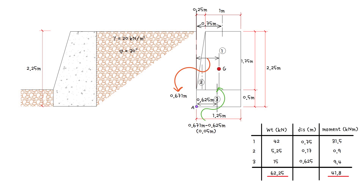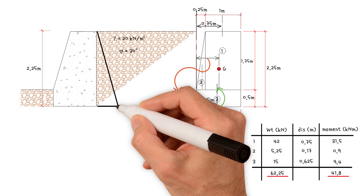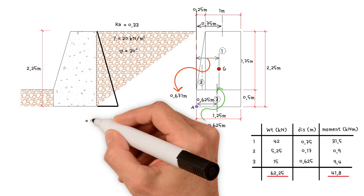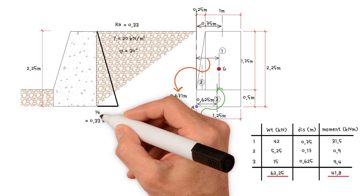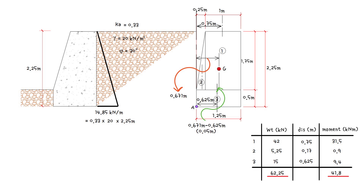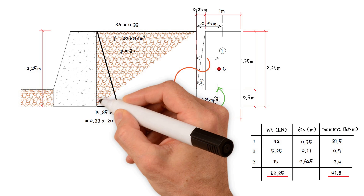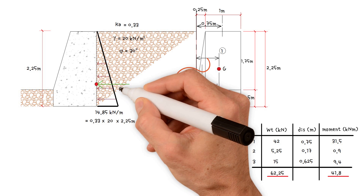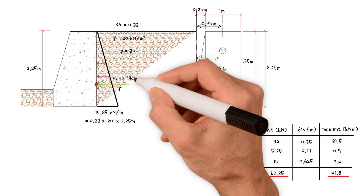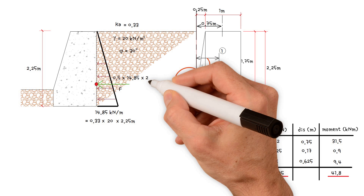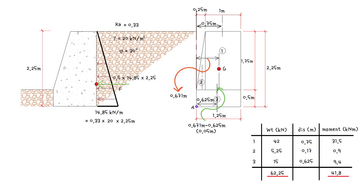Next, working out the horizontal soil pressure at the base of the wall, which equals the active pressure coefficient 0.33 times the soil density 20 kilonewtons per cubic meter times the height 2.25 meters, giving 14.85 kilonewtons per meter. Therefore, for a triangular distributed load, the magnitude of the resultant force equals the area of the triangle: 0.5 times 14.85 times 2.25 meters, which gives 16.71 kilonewtons.